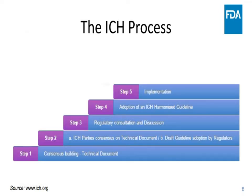This is the ICH process. It goes from step one at the beginning on the left to step five at the top. Step one is consensus building around a technical document. Step two is the ICH parties agree on and come to consensus on the technical document, and the draft guideline is adopted by the regulators. With that, they move to step three, which is regulatory consultation and discussion. In the United States, that means we post the guideline on our website and ask for public comment on it.